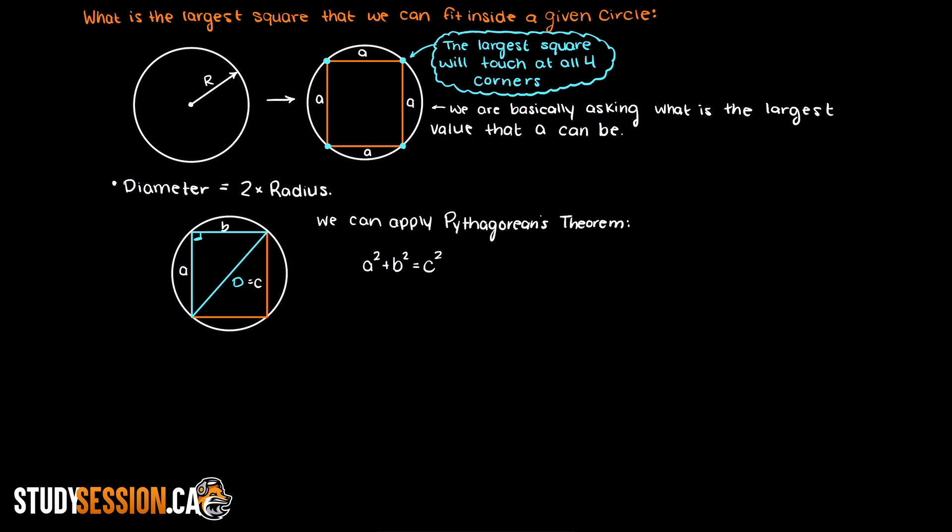Which states that side a squared plus b squared is going to equal side c or our diameter squared. Now since we still don't know both sides a and b, we have two unknowns in only one equation. Does this mean we're stuck? Well no, we just have to be a little bit clever. However, we notice that a and b must be equal as we are solving for a square. Therefore we can say that a is equivalent to b.